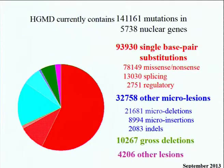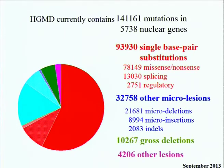As Ghazi has already mentioned, part of my day job in Cardiff is to curate the Human Gene Mutation Database. We first made these data publicly available to fellow geneticists back in 1996, and over the intervening 17 years we have acquired something over 140,000 different inherited mutations causing human inherited disease in a total of about 5,700 different genes.